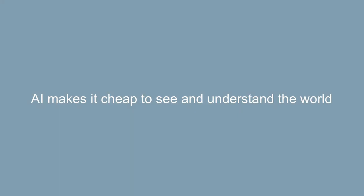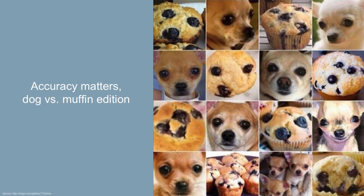The second class of things that AI will make cheap is seeing and understanding the world. One of the most exciting AI technologies invented in recent years is the generative adversarial network. Two neural networks compete: one classifies dogs, and another tries to trick the classifier by generating images that look like dogs but aren't. This back-and-forth competition makes the classifier extremely accurate — in fact, the most accurate image classifiers are now better than humans at classifying objects in a picture.